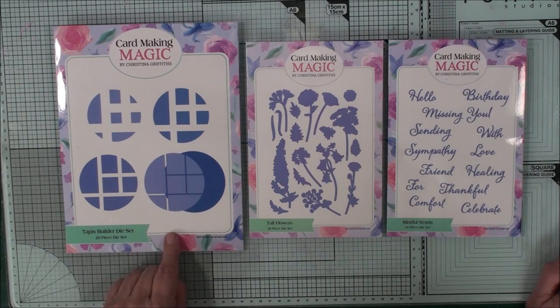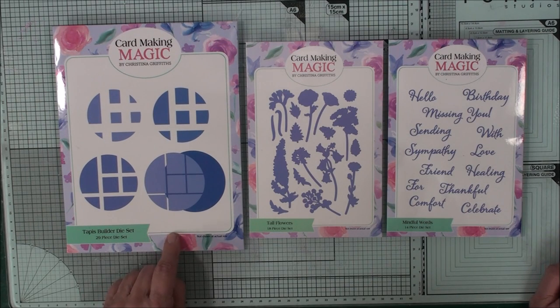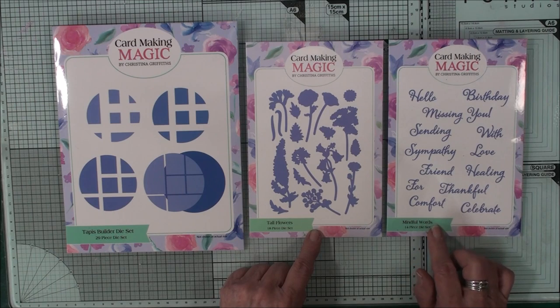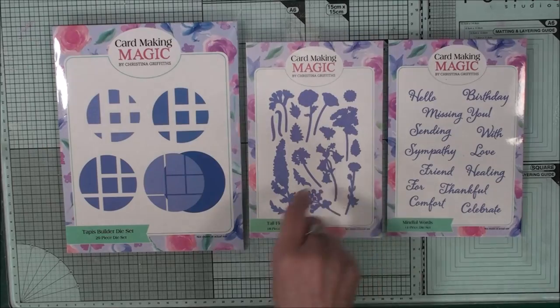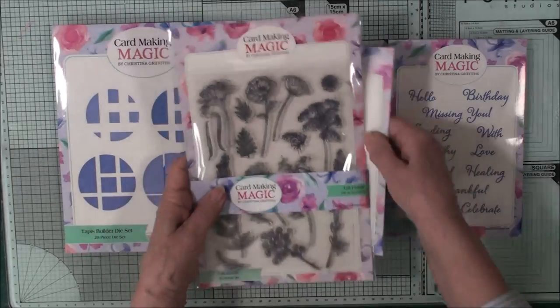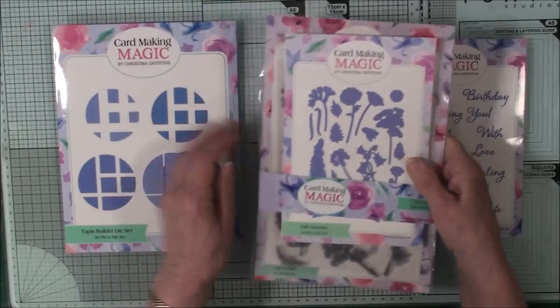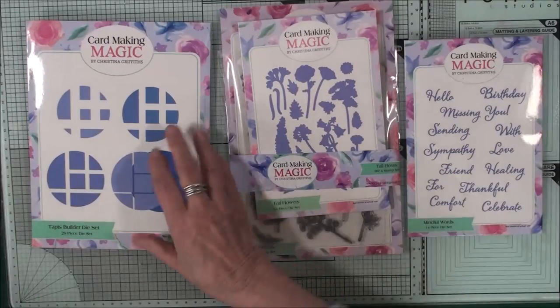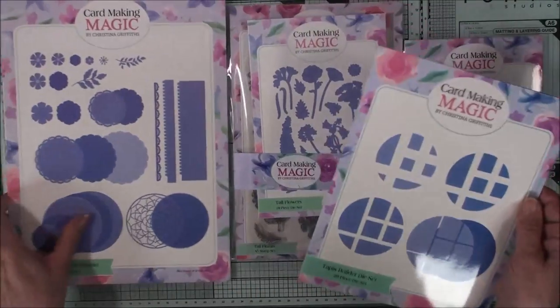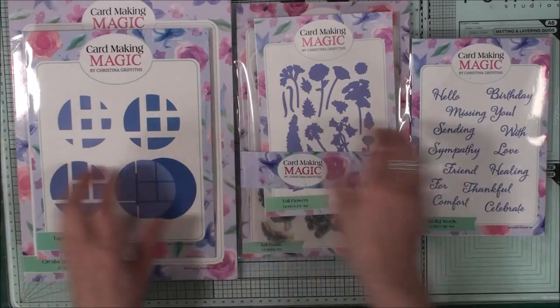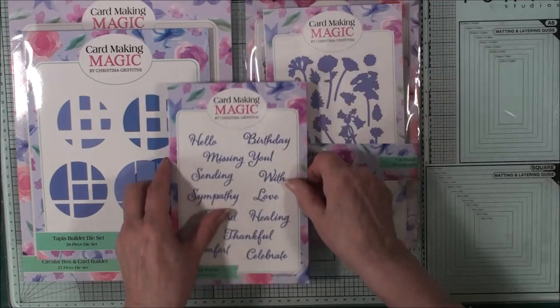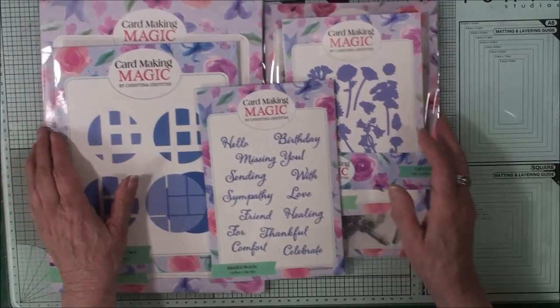Here we have the Tapis Builder die set, the tall flowers, and the mindful words. This has a stamp set that matches it and they will come together like this. This is designed to fit on top of the box lid that is the new circular box, and of course your words can go on anything that you create.